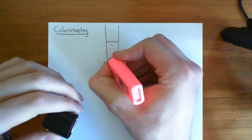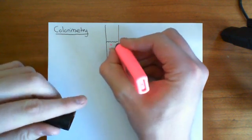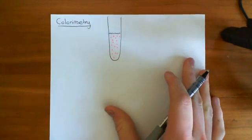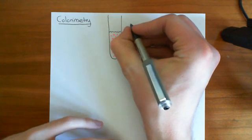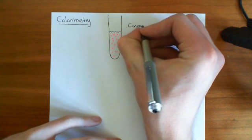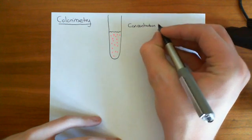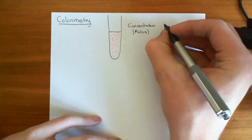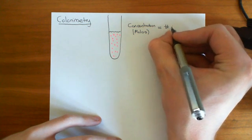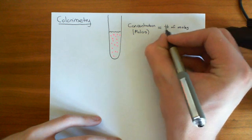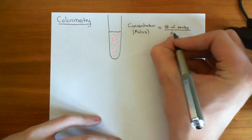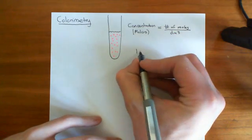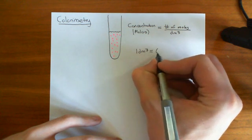Let's say we want to know what the concentration of those protein molecules is within that fluid. Concentration is just a number per certain volume, so concentration is usually measured in molars. That means the number of moles per decimetre cubed. A decimetre cubed is basically a litre — one decimetre cubed is equal to a litre.